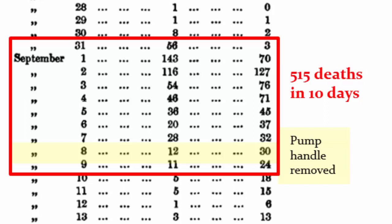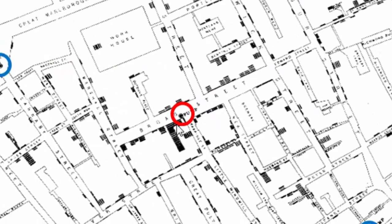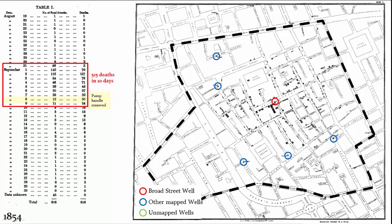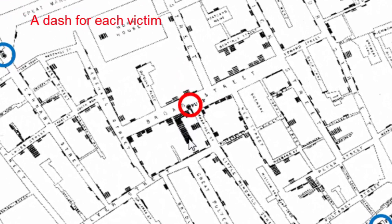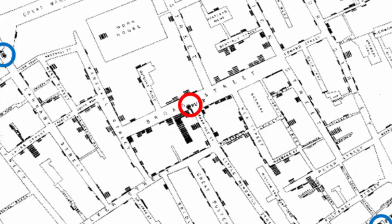John Snow believed that the Broad Street well — this well here — was the most likely source of the cholera outbreak, but he needed to prove that. So he created a map showing where each of the 500 cholera victims were when they became symptomatic. He put a dashed line at each street address — this is that geocoding concept. Importantly, he geocoded the address where they became symptomatic, not their home address, which is a very important consideration for study design.